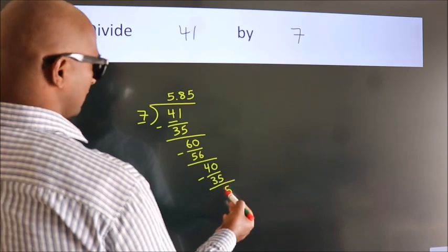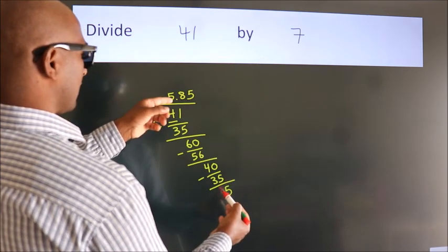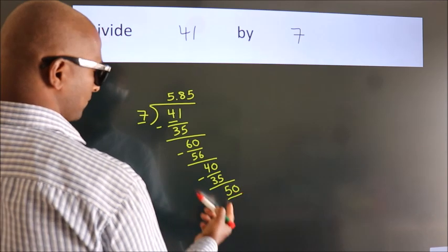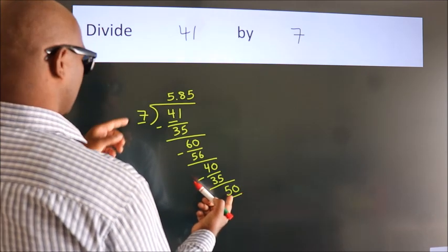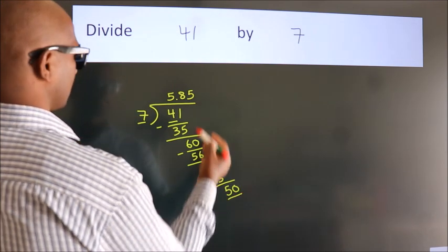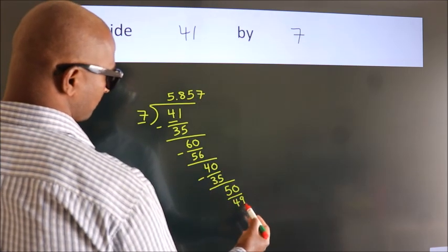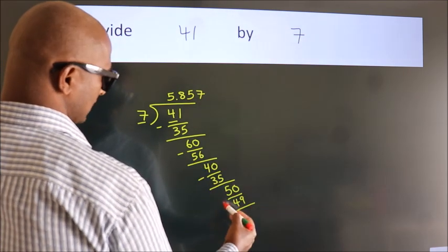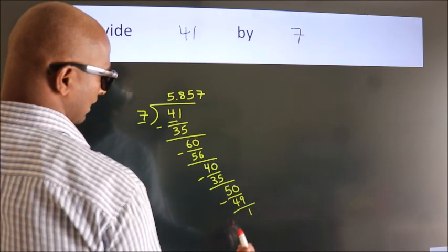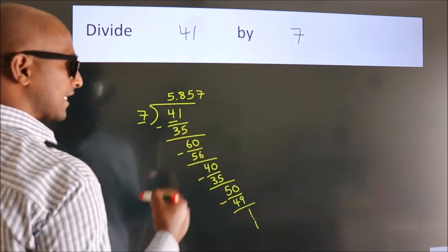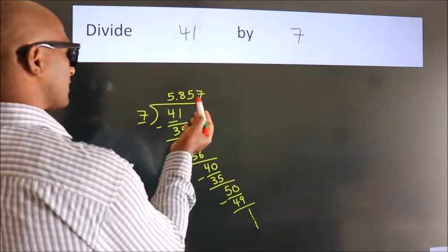After this, we already have the decimal, so directly take 0. So 50. A number close to 50 in the 7 table is 7 sevens, 49. Now we subtract. We get 1. And the division continues. It is enough if we do up to 3 decimal places.